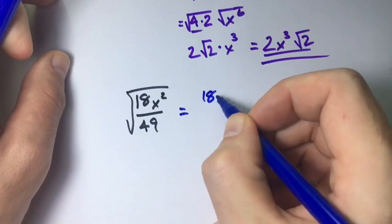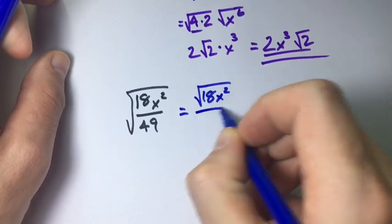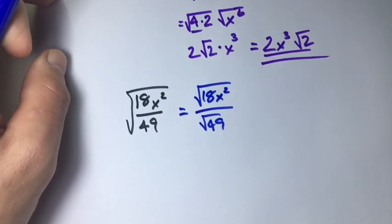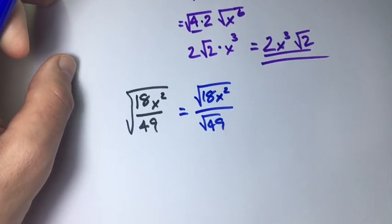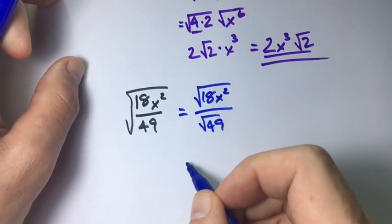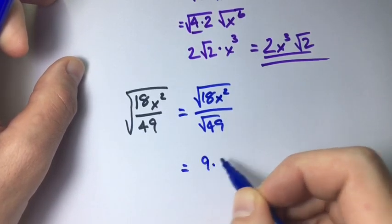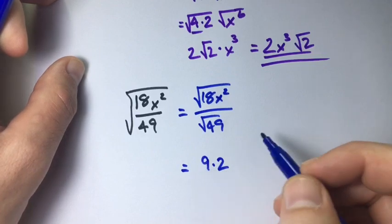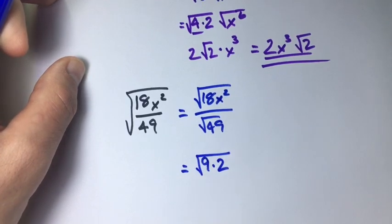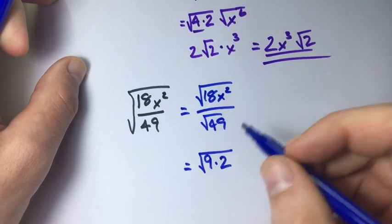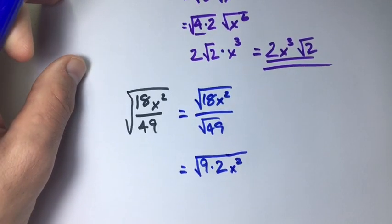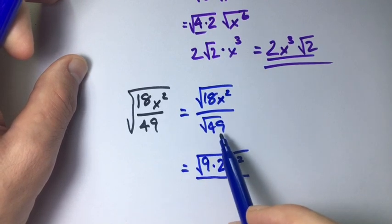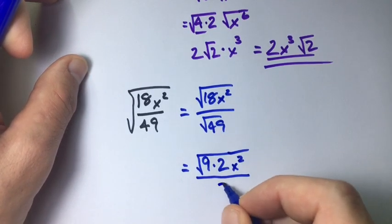So we have 18x squared over square root of 49. Now we know 18 isn't a perfect square but 9 times 2 is 18 and 9 is a perfect square. So that's easy to work with. And we also have x squared which is a perfect square so we're not going to mess with that. Now all this is divided by the square root of 49 which we know is equal to 7.